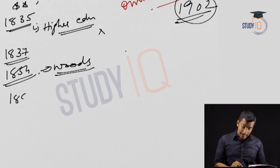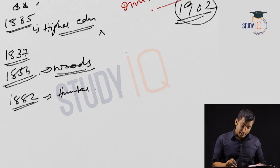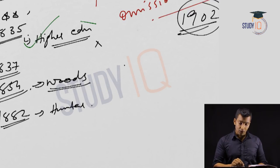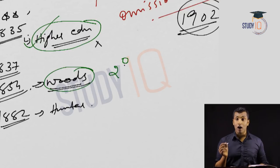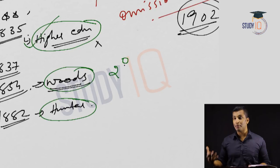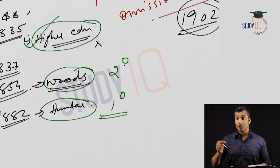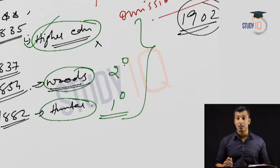After Wood's Dispatch, we saw the Hunter Commission in 1882. In 1835, importance was given to higher education; in Wood's Dispatch of 1854, to secondary education; and in the Hunter Commission of 1882, to primary education. So instead of going bottom to top, they came from top to bottom, and from here most problems with education were solved.